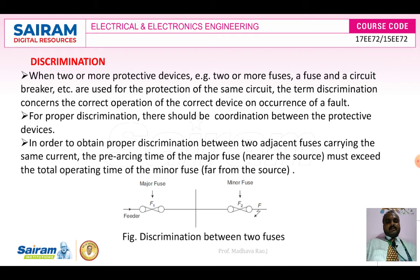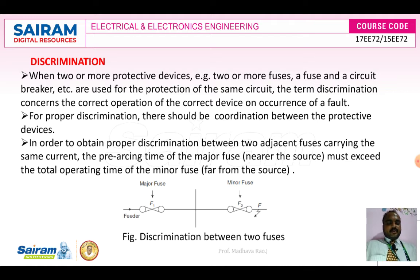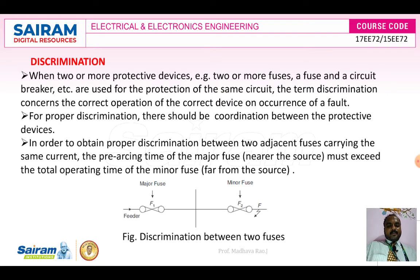Discrimination is one of the most important topics here. In the diagram, we are using two fuses — F1 and F2, a major fuse and a minor fuse. The minor fuse is used as backup protection, so whenever a fault occurs, that fuse must melt first.